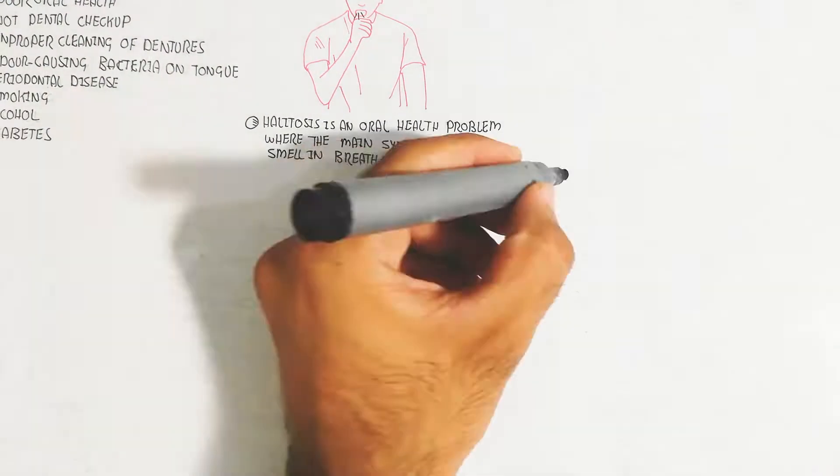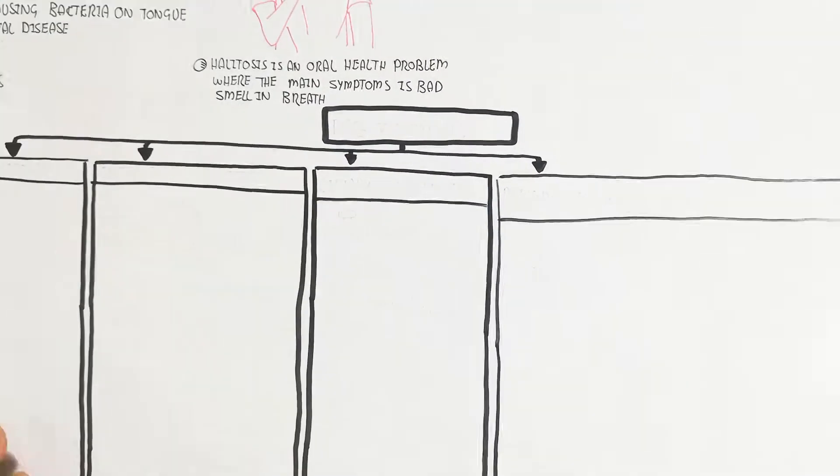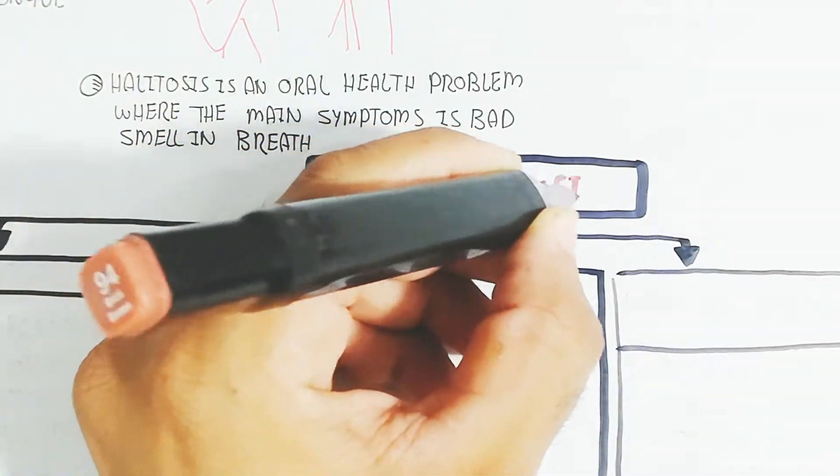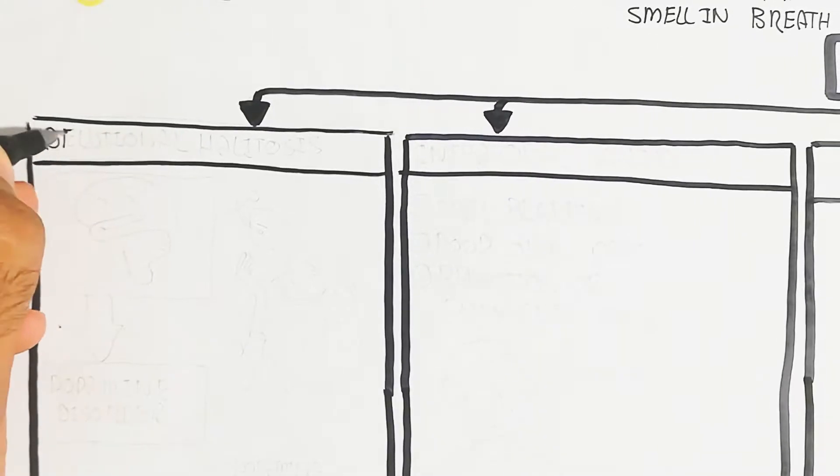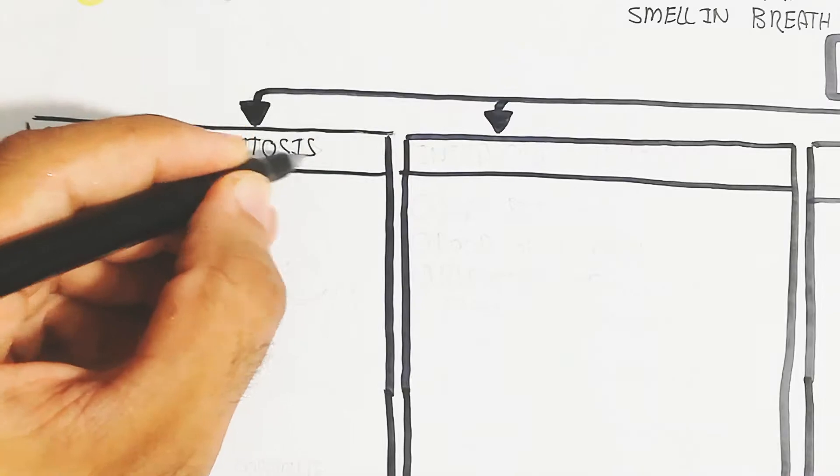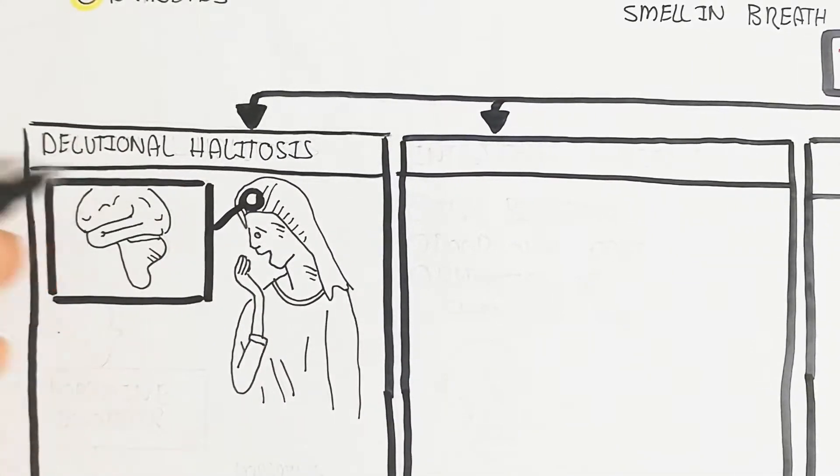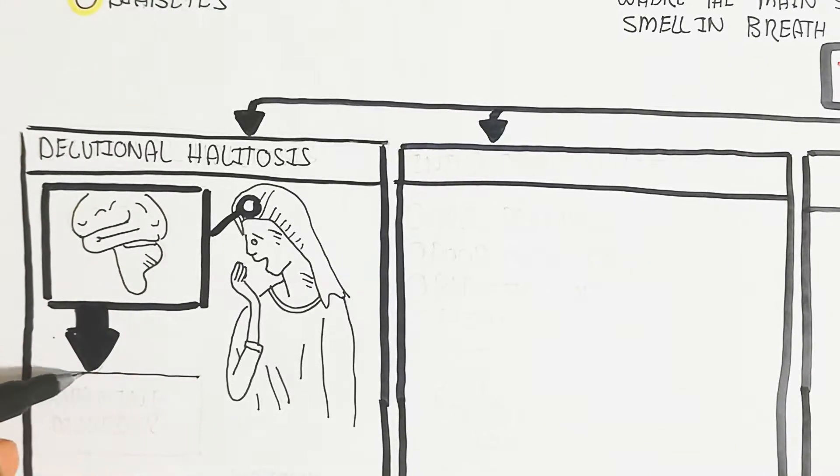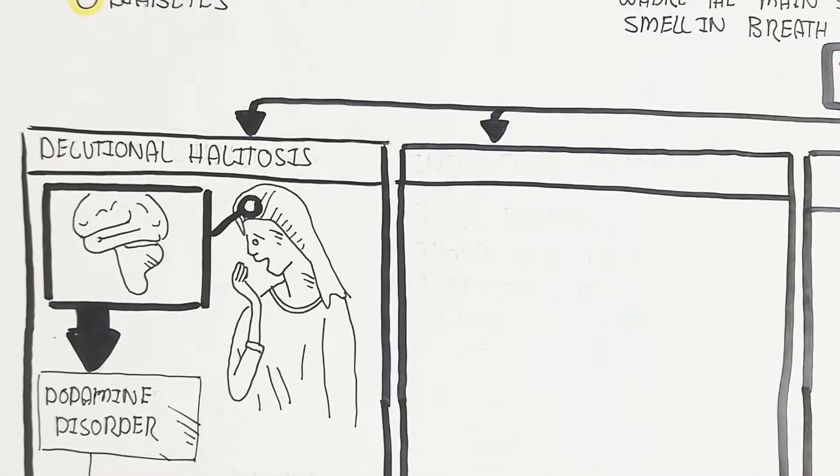Let's begin to understand the types of Halitosis. We will learn different types one by one. Number one is delusional Halitosis. Delusional Halitosis is when the person feels it themselves but other people cannot, because it is basically a limbic system problem. That is known as psychosis, a type of psychosis called delusional Halitosis.